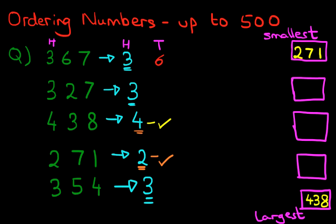How many tens are there in 327? Well, there are two tens. How many tens are there in 354? There are five. So we've got the tens, six, two, and five.